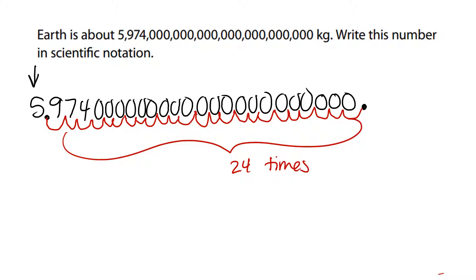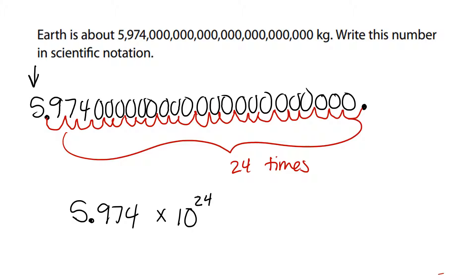When we write our answer, we write it as 5.974. We do not write the zeros — they are not important. Always write times 10. And then our exponent is a positive 24, because that is a very large number. We move the decimal 24 times.